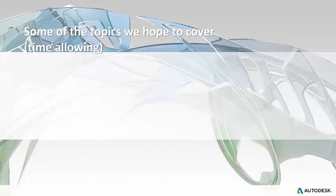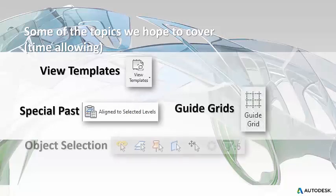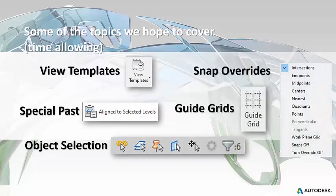So, things we're going to cover today — it's a very short webinar, about 20 minutes. Don't worry if you have to leave; you'll get a link at the end with the video. We're going to look at some view templates, paste special, some of the commands for snap overrides, keyboard shortcuts, guide grids, and some of the object selection tools within the package.